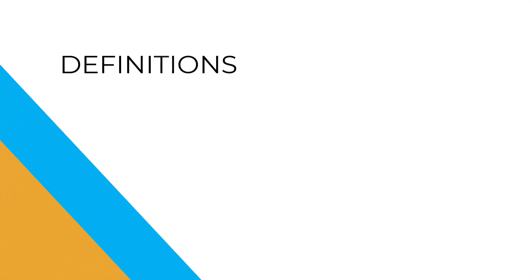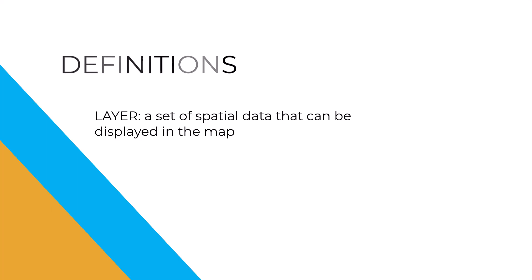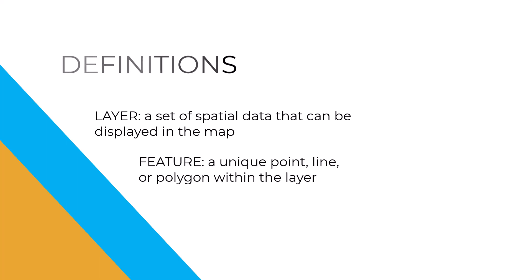Before we open the maps, we should cover a couple of terms. For the purposes of this training, a layer refers to a set of spatial data that can be displayed in the map. A feature is a unique point, line, or polygon within the layer and represents something in the real world. It may represent something physically on the ground, like wetlands and roads, or it could be a boundary used for other purposes, like voter precincts and zoning.